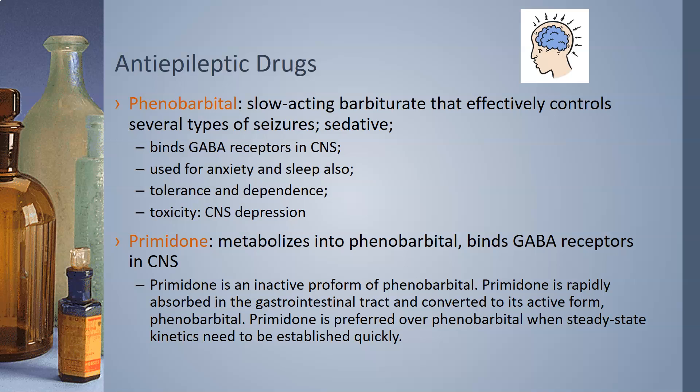Primidone metabolizes into phenobarbital and binds GABA receptors in the central nervous system. It is an inactive form of phenobarbital. Primidone is rapidly absorbed in the GI tract and converted to its active form, phenobarbital. Primidone is preferred over phenobarbital when steady-state kinetics need to be established very quickly.